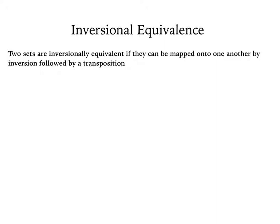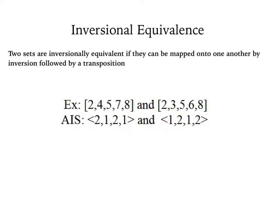Now let's talk about inversion. In order to find out if two pitch class sets are inversionally equivalent, we again have to start out with two sets with the same number of pitch classes. Two sets are inversionally equivalent if they can be mapped onto one another by inversion followed by transposition. What do I mean when I say that? Let's find out first if the two sets are inversions of one another by examining their AIS.